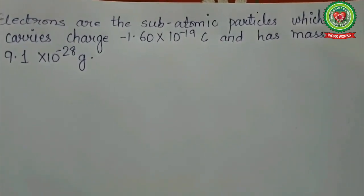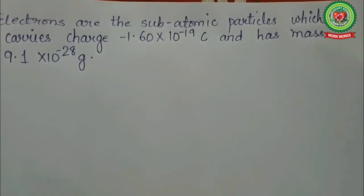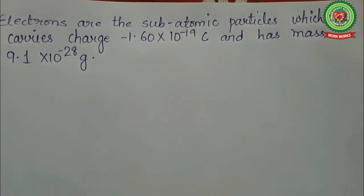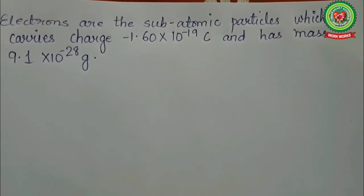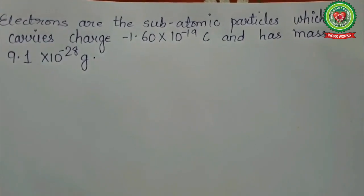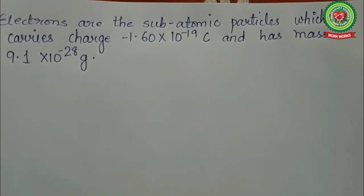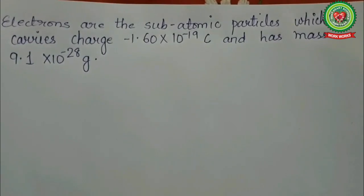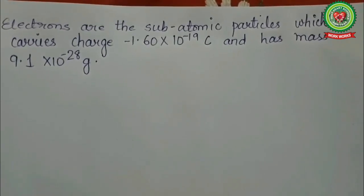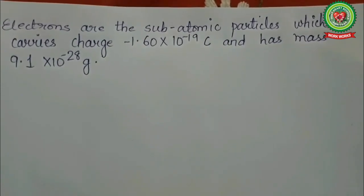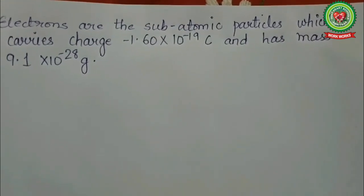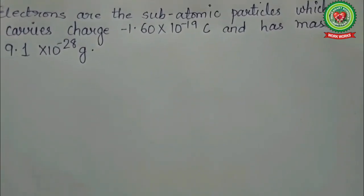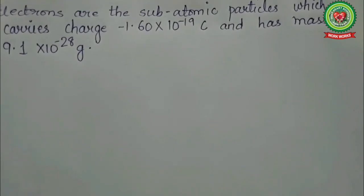This is how the electron was discovered from the cathode ray experiment. J.J. Thomson was the scientist who actually discovered the electron. Electrons are subatomic particles which carry a charge of −1.60 × 10⁻¹⁹ coulombs and have a mass of 9.1 × 10⁻²⁸ grams, or 9.1 × 10⁻³¹ kilograms. Electrons are defined as the negatively charged particles which revolve around the nucleus of an atom.